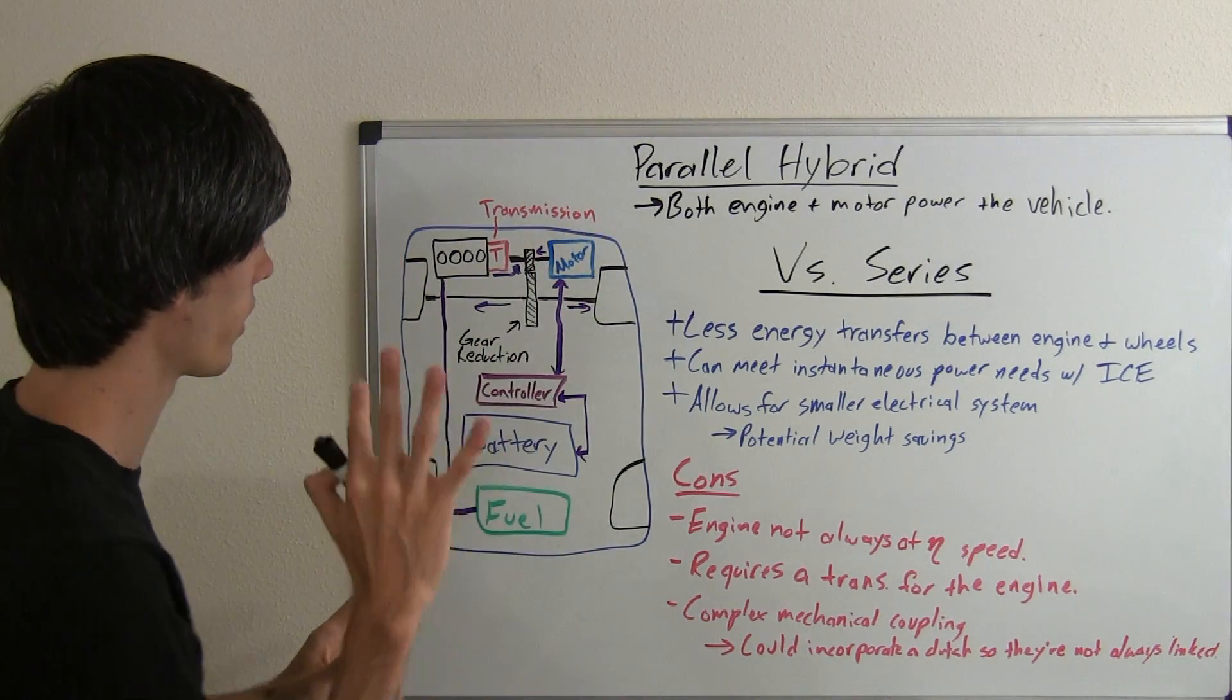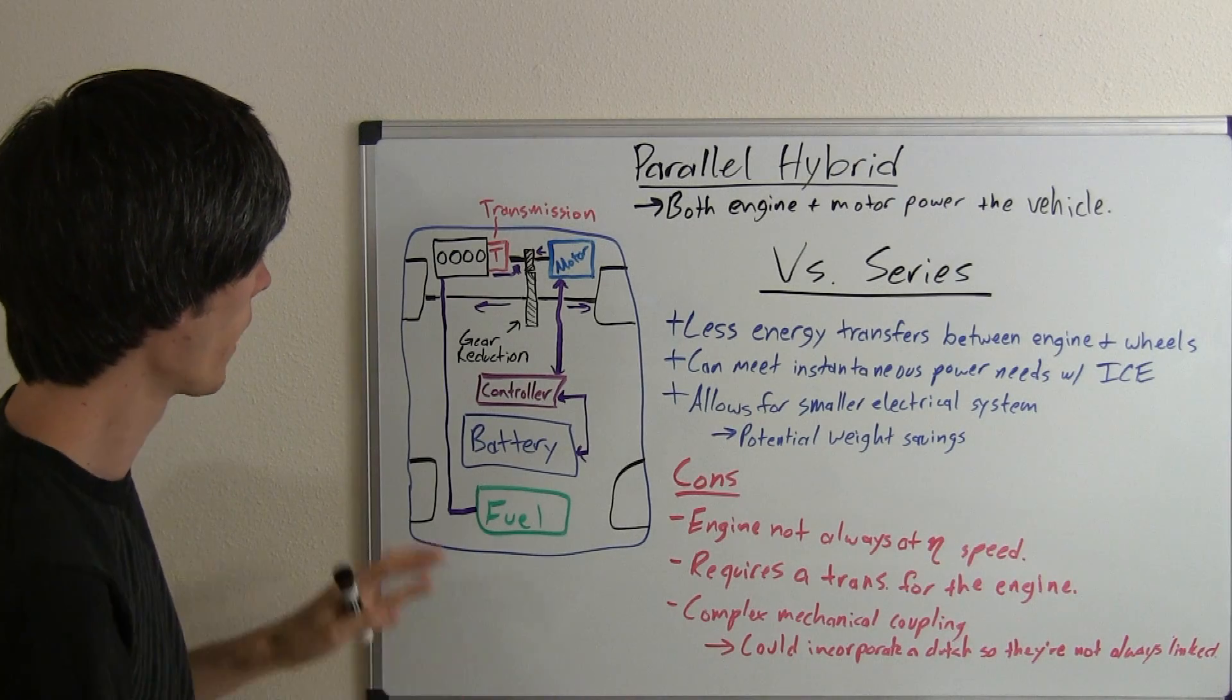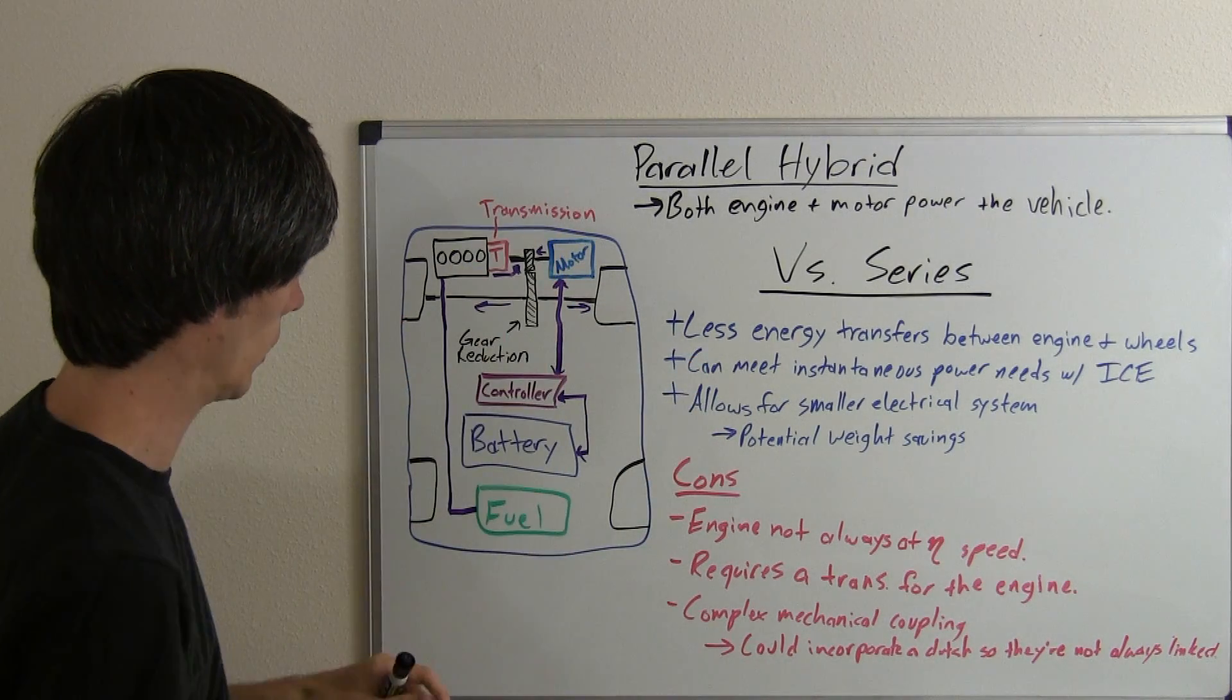So here's our basic layout as a top view looking down on the car. You've got your four tires and here's the front of the car.